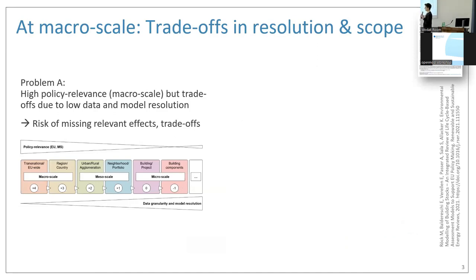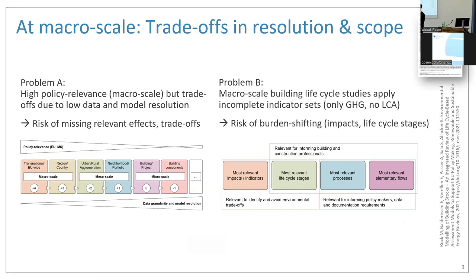As we try to understand more the implications of this problem at the macro scale, we face two problems. One is the high policy relevance of macro scale modeling, but the trade-offs in model resolution and data granularity. The other is that due to these limitations, we see incomplete indicator sets being deployed in this kind of analysis, mostly focusing on cumulative energy demand and greenhouse gas emissions, but leaving out other important indicators — implying the risk of not identifying burden shifting between indicators and between lifecycle stages.